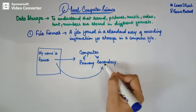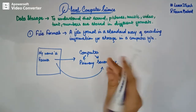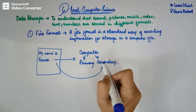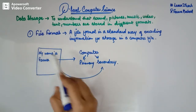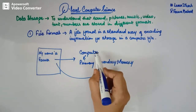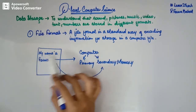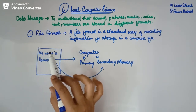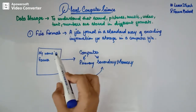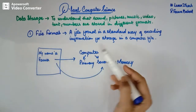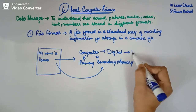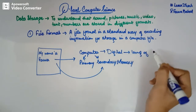I will explain this in my further videos on types of files. For now, just keep in mind that we have two kinds of storage in a computer system: primary and secondary storage. As we know, a computer does not understand anything like 'my name is Furvan,' any image, any video, or any music. The machine is not capable of understanding this particular file because it is a digital machine, and a digital machine understands the language of binary numbers.